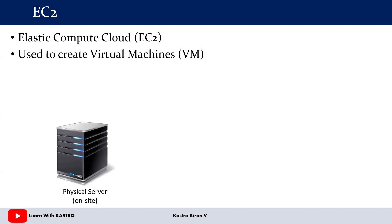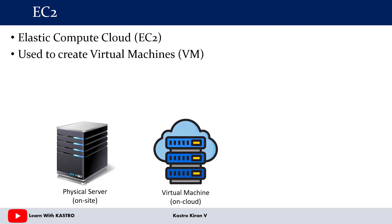Let's say we have a physical server available on-site. When a server is on-site, you need to maintain it — you need a specific room, a maintenance team, and multiple teams to ensure servers never go down and applications stay up and running. But with cloud, the cloud service provider takes care of server maintenance. You use the cloud service provider to create the server on the cloud platform, and those servers are called virtual machines.